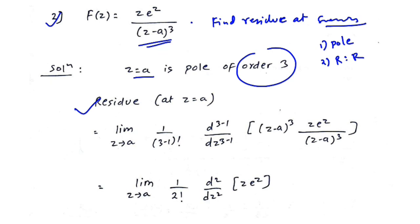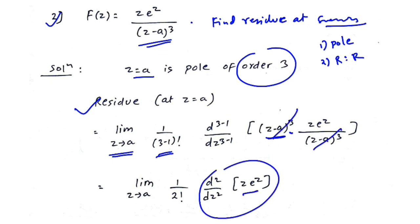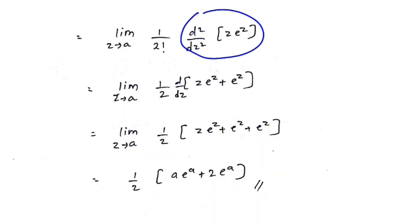The pole is repeated, so use the repeated pole formula. The residue equals limit as z tends to a, times 1 over (3 minus 1) factorial, times the second derivative of (z minus a) cubed into f of z. The (z minus a) cubed terms cancel, leaving us to differentiate z times e raised to z twice.